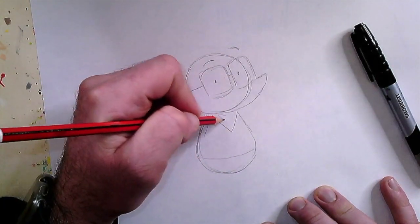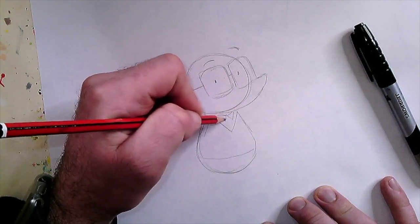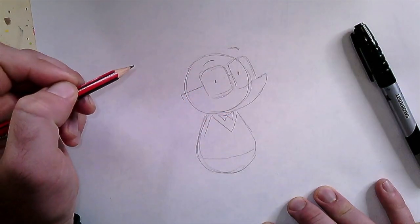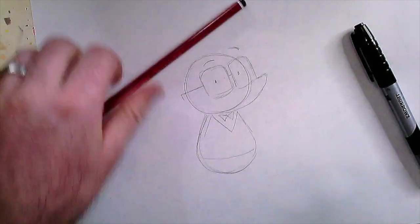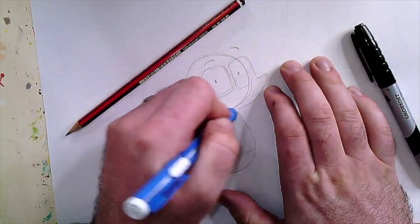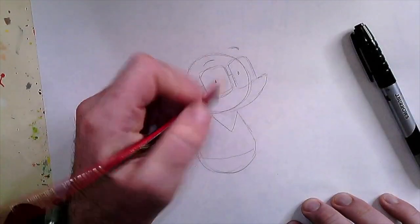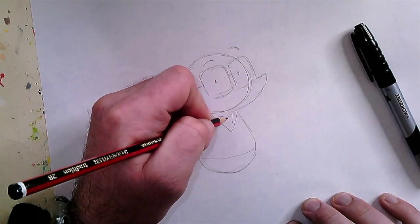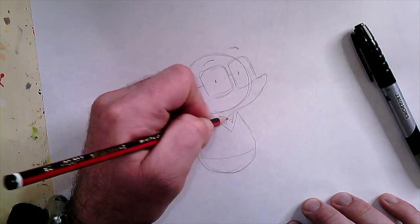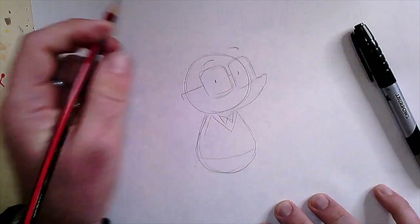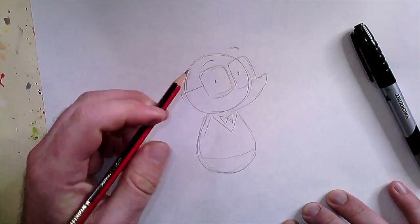His bow tie is made up of two triangles facing each other in the middle. Actually, I might even just move them down a tad. You can always rub stuff out, doesn't matter.